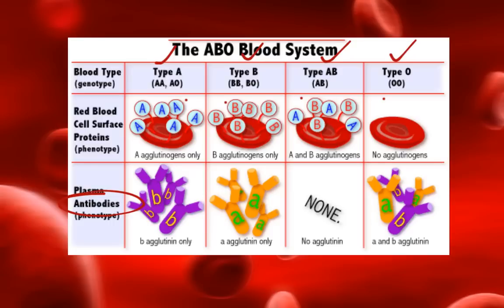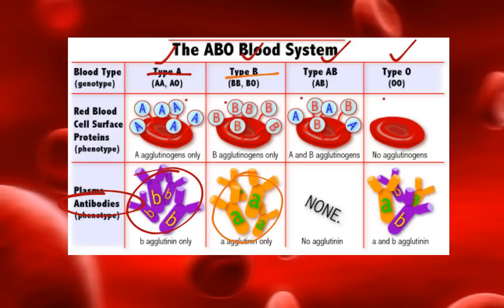So if you are a person with type A blood and you are given type B blood in a transfusion — say after a car accident or surgery — the B antibodies in your body would begin to fight that off and it can make you very sick. The same is true if you are type B and accidentally given type A blood, because your body has built up A antibodies that will begin to fight off the A blood, which could make you very ill.